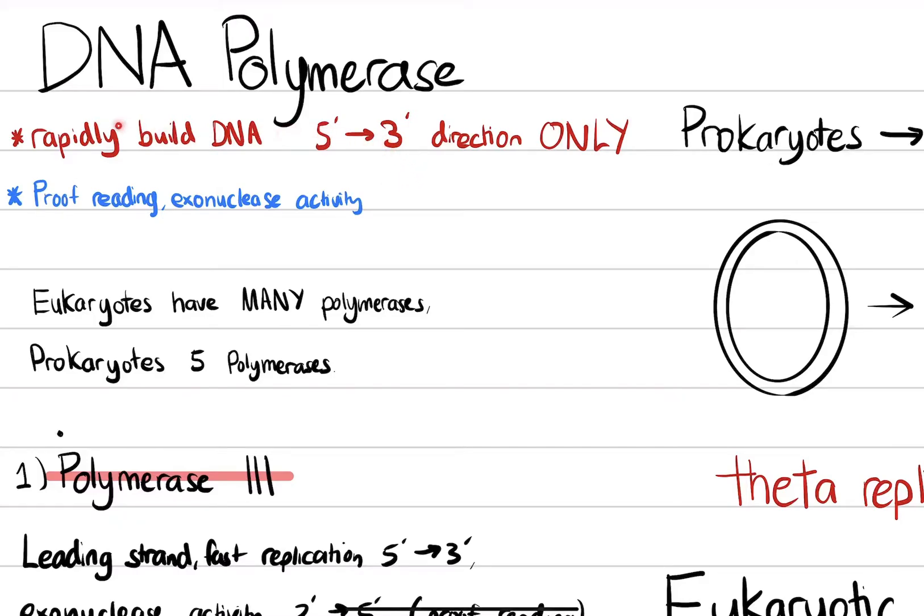And the second function of DNA polymerase is proofreading. And if a mistake is found, it can cause something called exonuclease activity. Exonuclease activity is when a mistake or mutation is found, it has the ability to cleave that nucleotide and fix it.